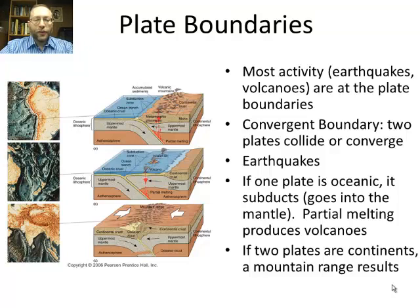The continental crust never subducts because it isn't dense enough to sink into the mantle. So when you have this type of convergent boundary, you always end up with a volcanic mountain chain — either an island mountain chain like Japan, or one along the coast of a continent like in South America. When two continental crusts collide, there is no subduction, and you just end up with a huge mountain range. The best example today would be the Himalayas, and we have the remains of one here in New York — the Appalachian Mountains.